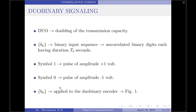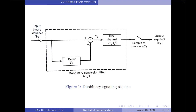Now let the input binary sequence Bk be applied to a duobinary encoder as shown in the diagram. The input binary sequence Bk is first passed through a simple filter, which involves a 1-bit delay element. For every unit impulse applied to this filter, we get two impulses spaced 1 Tb seconds apart at the filter output. Since there is a 1-bit delay element, if this is the kth bit, then the output of the delay element will be Bk minus 1.